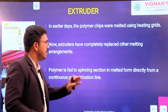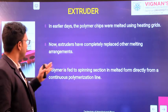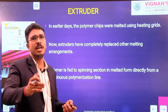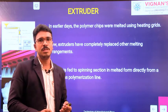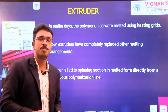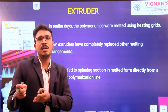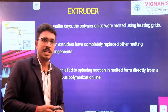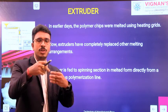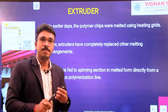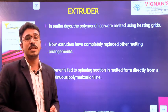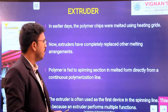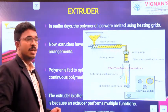The polymer is fed to the spinning section in melted form directly from a continuous polymerization line. In case of polyester and nylon, after the polymerization process — conversion of monomers to polymer — it leads to a molten polymer. That molten polymer can directly be fed to the spinning through the manifold to different spinning lines. But if the polymerization process leads to a solid polymer — as in case of polypropylene and polyethylene — you can use this extruder to melt the polymer chips.